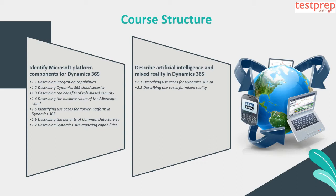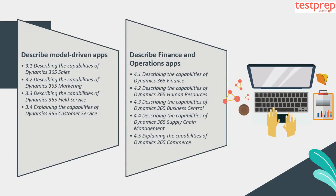Topic 2: Describe Artificial Intelligence and Mixed Reality in Dynamics 365. This includes: 1. Describing use cases for Dynamics 365 AI. 2. Describing use cases for Mixed Reality. Topic 3: Describe Model Driven Apps. This includes: 1. Describing the capabilities of Dynamics 365 Sales. 2. Describing the capabilities of Dynamics 365 Marketing. 3. Describing the capabilities of Dynamics 365 Field Service. 4. Explaining the capabilities of Dynamics 365 Customer Service.